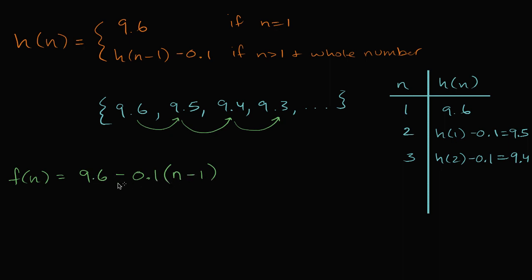You can verify this works. When n equals one, the n minus one term is zero, so you get 9.6. When n equals two, two minus one is one, so you subtract 0.1 once: 9.6 minus 0.1 is 9.5. The key idea is you start at 9.6 and subtract 0.1 one fewer times than the term you're looking at. For n equal to four you subtract 0.1 three times — once, twice, three times.